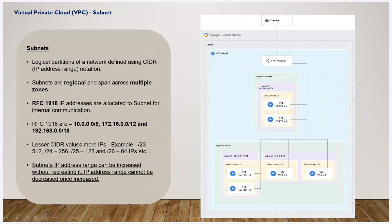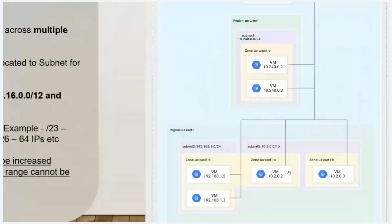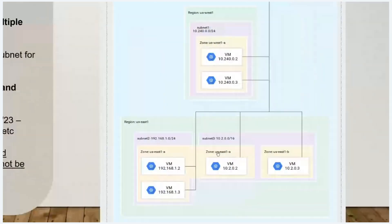Subnet one is the original and it spans across multiple zones. Subnet two and subnet three also span across zones. In those subnets, Zone A services and Zone B services are created, and the subnet spans across multiple zones.